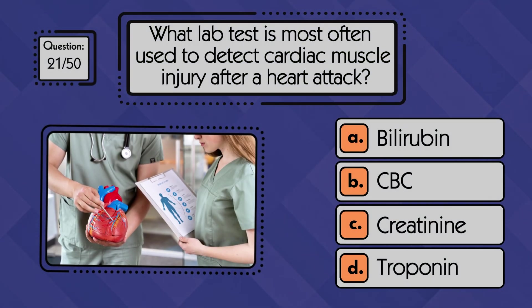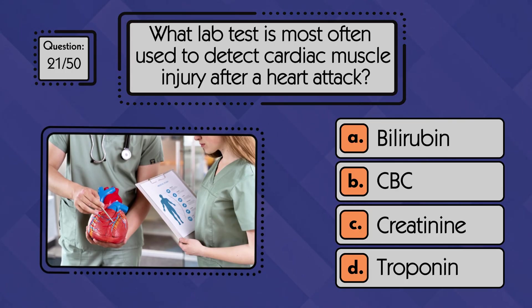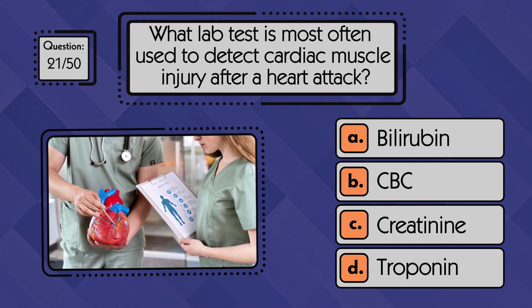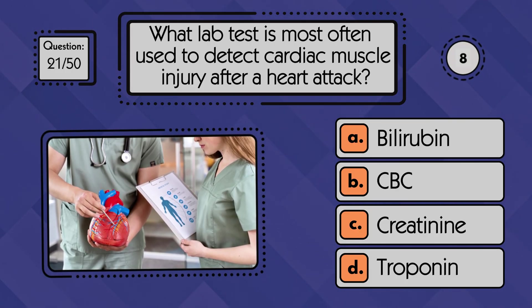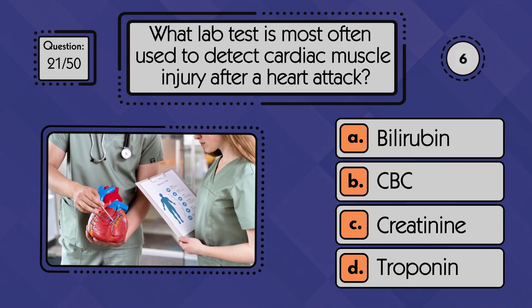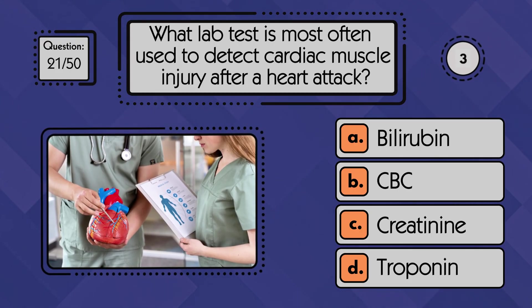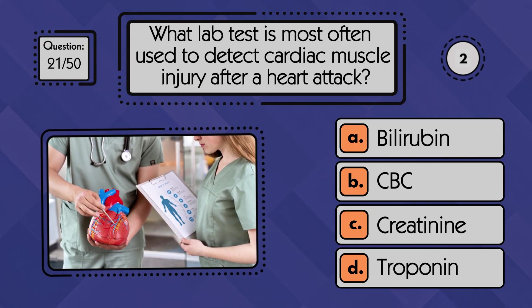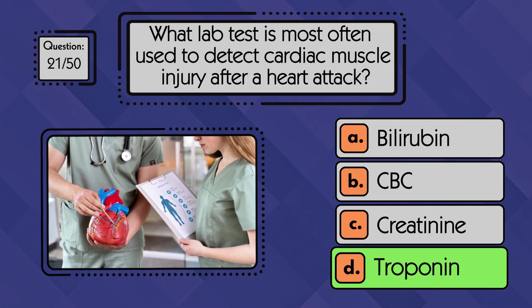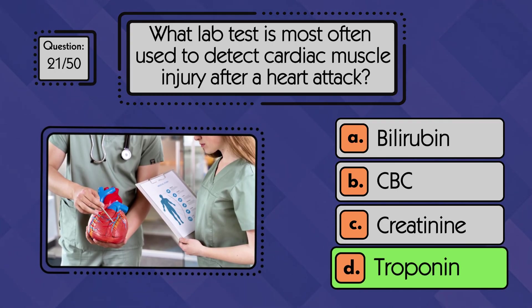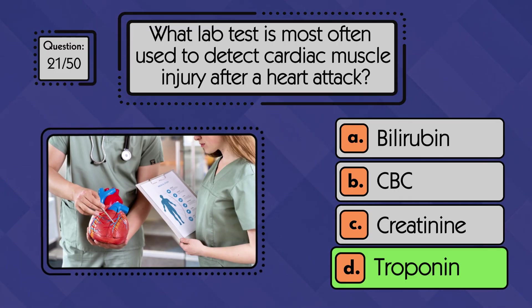What lab test is most often used to detect cardiac muscle injury after a heart attack? Troponin is the key marker because its levels rise sharply when heart muscle cells are damaged.